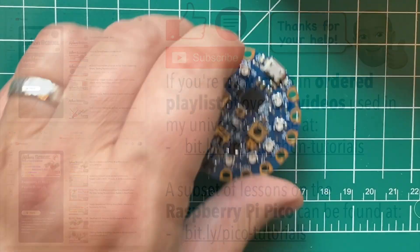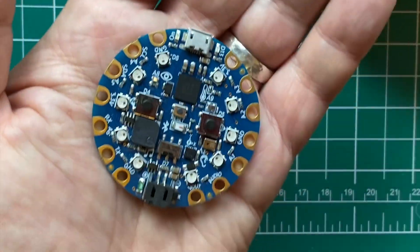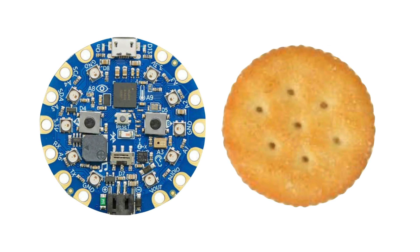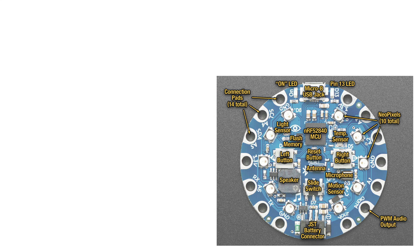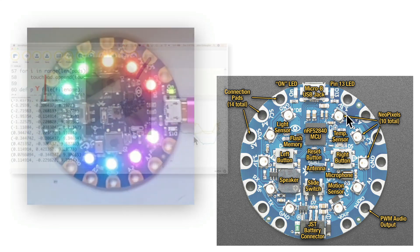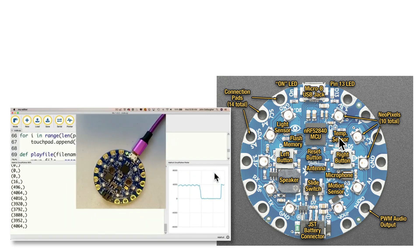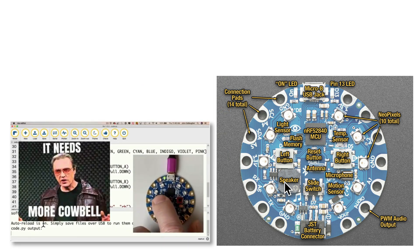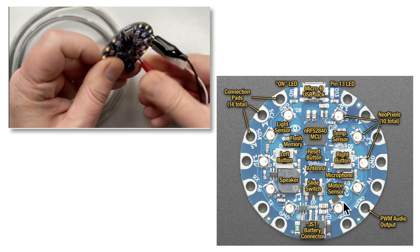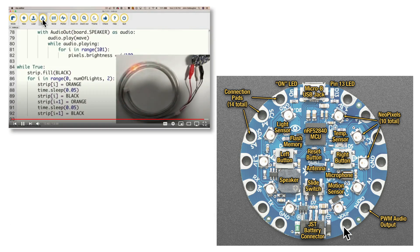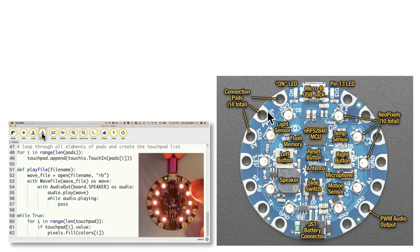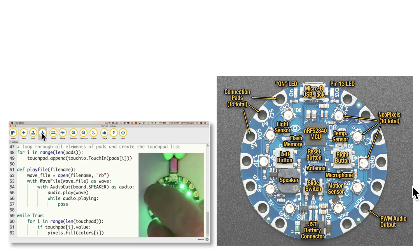Now I use two boards in this course. We start out with a $25 Circuit Playground Bluefruit by Adafruit, sometimes referred to as the CPB. It's about the size of a Ritz Cracker, and it's a great first board because it's packed with features, including 10 individually controllable multicolored LED lights, a motion sensor, a light sensor, a temperature sensor, a speaker, two buttons, a slide switch, and 14 connection pads so you can expand the board with add-ons using simple alligator clips and avoid soldering or breaking out the breadboard. Seven of these pads support capacitive touch, meaning you can write code to react when you've touched them.